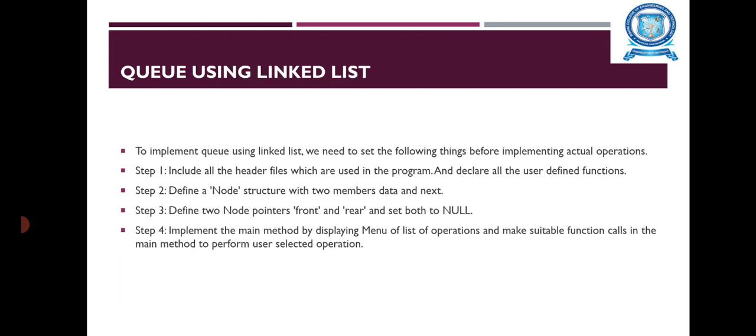Next, Queue using Linked List. To implement a queue using a linked list, set up the following before implementing operations: First, include all the required header files. Then, define a node structure with two members — data and next. Next, define two node pointer variables, front and rear, and set both to null. Then implement the main method by displaying a menu of operations and making suitable function calls to perform user-selected operations.